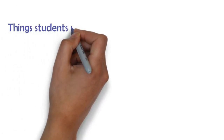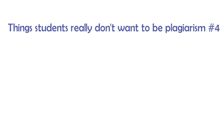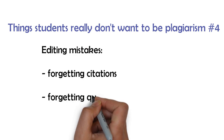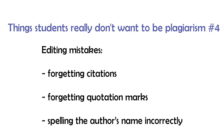We're on to our final thing that students really don't want to be plagiarism, and this is really just a collection of editing mistakes. First, we have forgetting citations. Remember that if you forget to cite someone, then you're implicitly claiming to the reader that the ideas you're writing down are all your own. And if those ideas aren't yours and you don't cite, then it's plagiarism. Secondly, we have forgetting quotation marks, and this is plagiarism even if you give a citation, because if you don't use quotation marks, then you're implicitly stating 'these are my own words, I made them up.' So again, plagiarism.